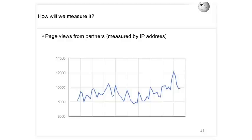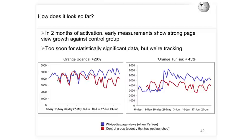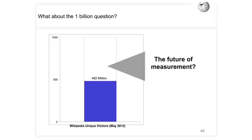On measuring impact, we're working hard on analytics to measure the actual impact of Wikipedia Zero. The best way we know to do this — extremely difficult — is to measure page views from partners' IP ranges. After two months of data in Uganda and Tunisia, and a month in Malaysia and a few weeks in Niger, we've seen about 20% growth in all page views from the partner's IP ranges in Uganda and over 45% in Tunisia. We're also tracking a control country like Cameroon that hasn't launched, to distinguish organic growth from growth due to Wikipedia being free.